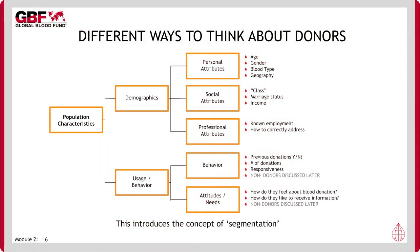There are various ways of thinking about donors — namely their demographic characteristics, the way in which they behave, and the attitudes they hold. These can be considered separately or together. This introduces the concept of segmentation, which involves thinking about donors in certain ways based on one or more shared characteristics. There is no single way of approaching donor segmentation because, depending on the cluster of characteristics under consideration, donors can fall into many segments. Art meets science in this area.